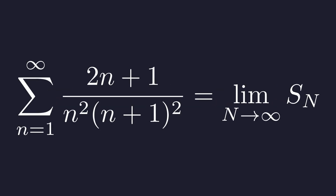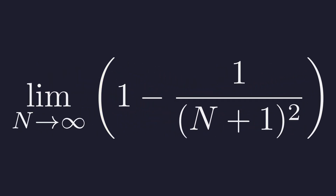The value of the infinite sum is the limit of this partial sum as n approaches infinity. By definition, the sum is the limit of the n-th partial sum. We substitute our simplified expression for S_n into the limit, giving us the limit of 1 − 1/(n+1)² as n approaches infinity.